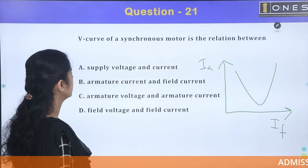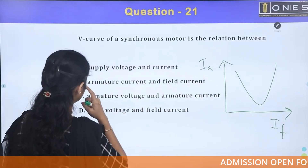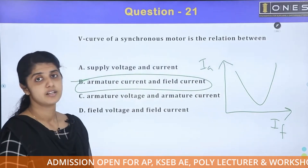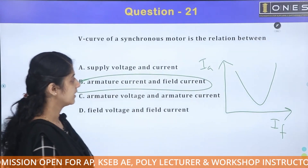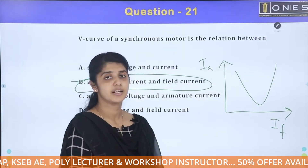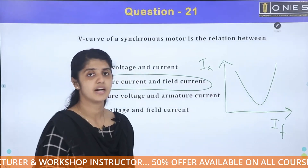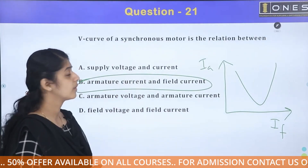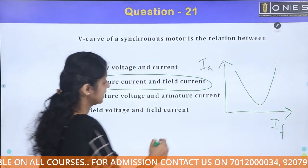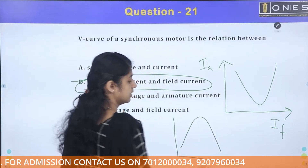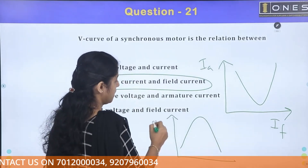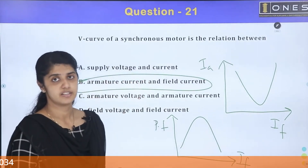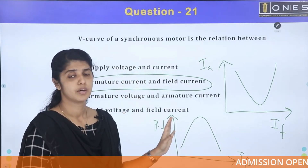The armature current versus field current V-curve — which type is it? Option B: armature current versus field current. The power factor versus field current graph has an inverted V-shape, representing the power factor curve of the synchronous motor.